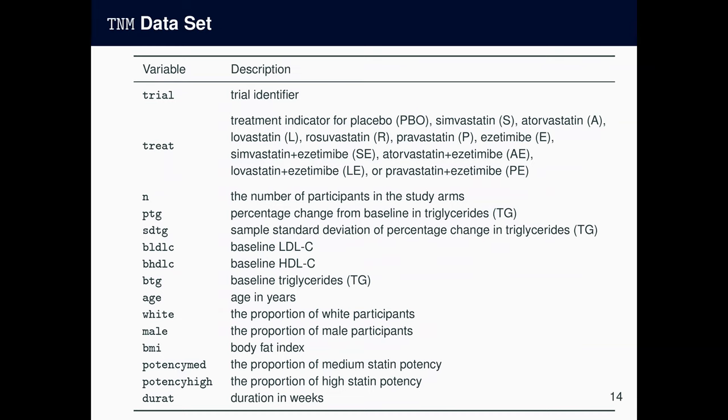Likewise, the TNM dataset, which stands for triglycerides network metadata, has 11 treatments total. So placebo, simvastatin, atorvastatin, lovastatin, rosuvastatin, these are the treatments, and these are 11, including the placebo. And the primary endpoint was PTG, percent change from baseline in triglycerides. SDTG is the corresponding standard deviation. And BLDLC, BHDLC, BTG are the baselines of LDLC, HDLC, and triglycerides. And the rest are extra attributes of the patients that can be included in the fixed effects covariates.